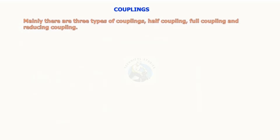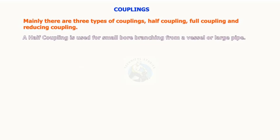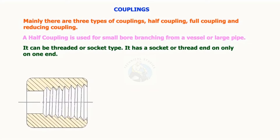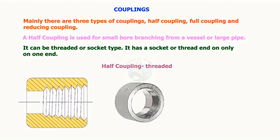Mainly there are three types of couplings: half coupling, full coupling, and reducing coupling. A half coupling is used for small bore branching from a vessel or a large pipe. It can be threaded or socket type. It has a socket or thread end only on one end.